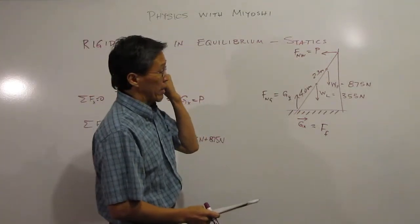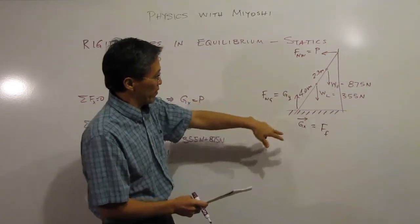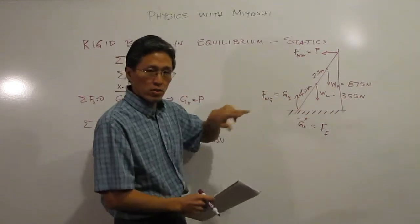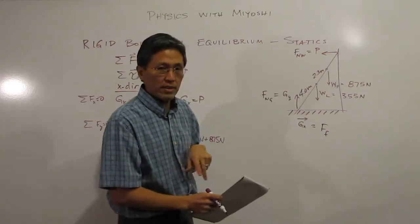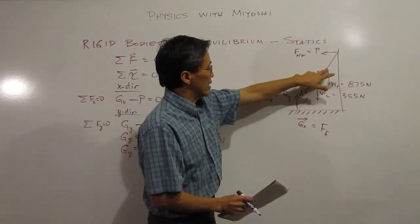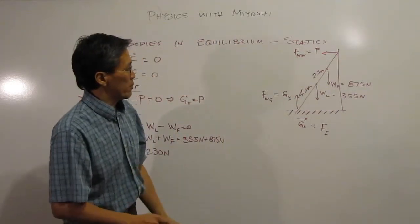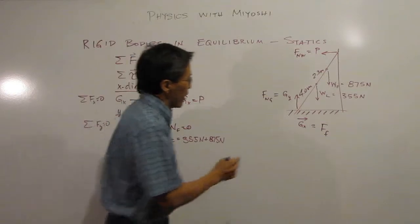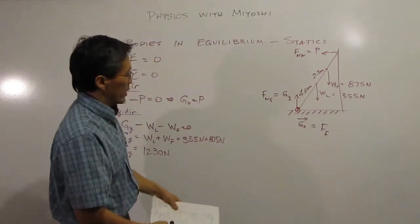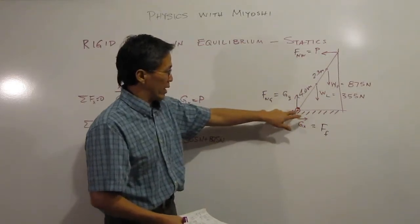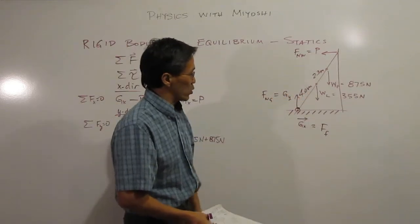Now we need to choose a point to sum torques around. Good choices include the corner, the center of mass of the ladder, where the firefighter is, or point P where the ladder touches the wall. We'll rotate around the bottom corner so that two forces act exactly on that point, giving zero torque and simplifying the equation.